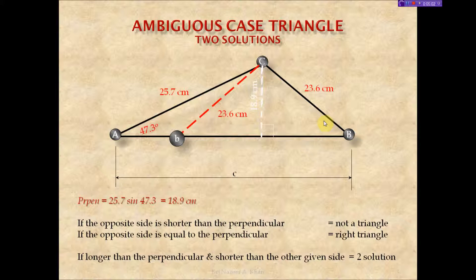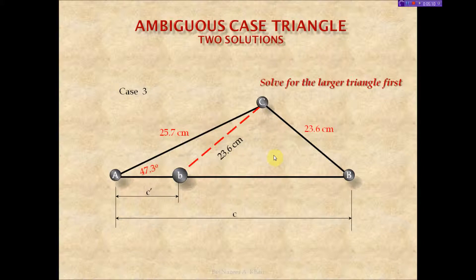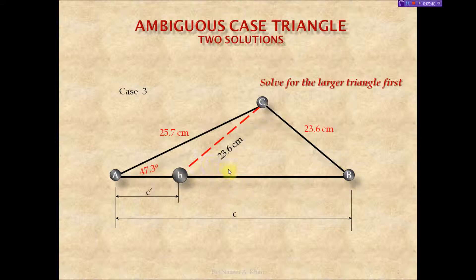If we solve one base angle, we know the other. We have the two triangles — the large black triangle and the smaller triangle — so this is definitely an ambiguous case with two solutions from the same set of information. There was no angle or length given for that side, so there's nothing stopping us from swinging the leg in or out. We have to solve the larger triangle first.